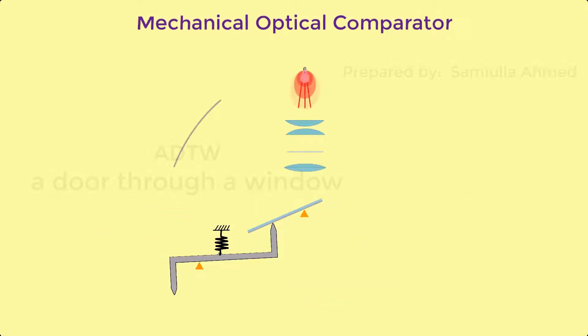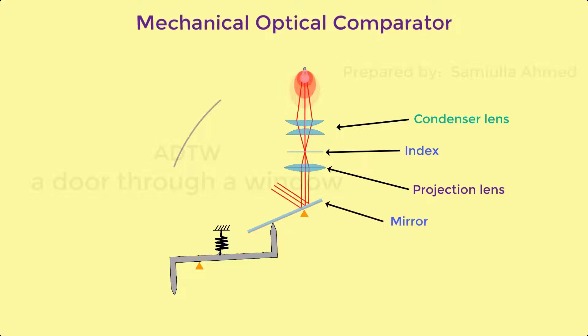A beam of light passes through a condenser lens that condenses the beam of light which helps in rendering of sharper image. A condensed beam of light passes through an index. This image is projected by a projection lens onto the plane mirror. The mirror in turn reflects this image onto the inner surface of the ground glass screen which has a scale.